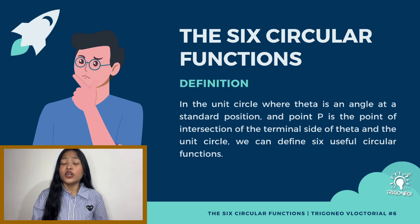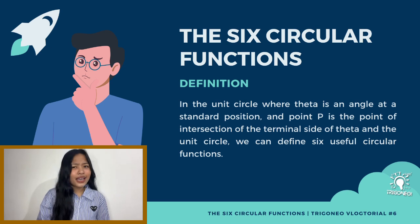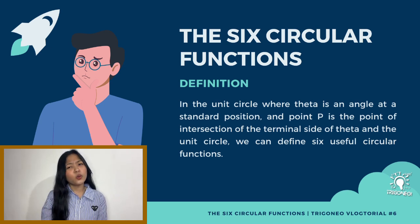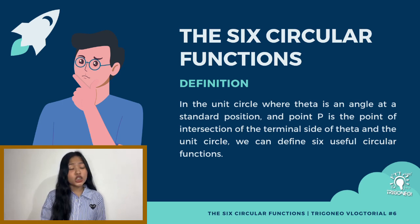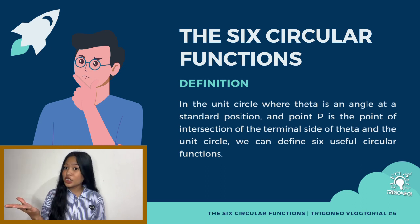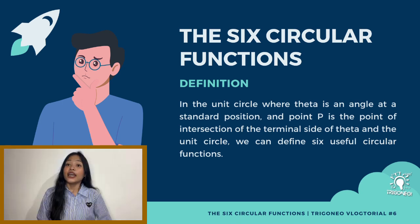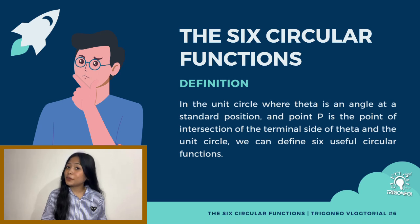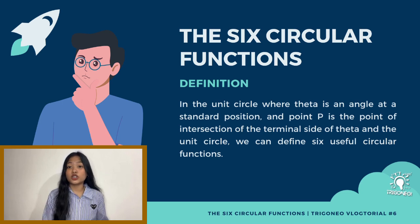Back in junior high school, you were actually oriented with the six circular functions. However, way back then, it was introduced as the six trigonometric functions and was only used on acute angles. But this time, we now paraphrase that concept into the six circular functions and apply its definitions and conditions on non-acute and even negative angles. In the unit circle, where theta is an angle at standard position and point P is the point of intersection of the terminal side of theta and the unit circle, we define six useful circular functions.